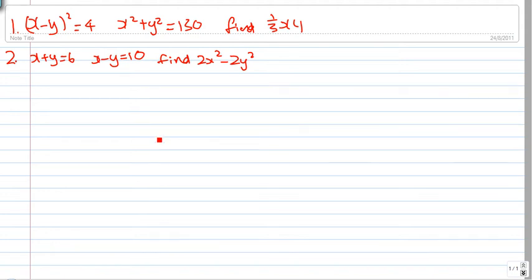Okay, I've got another two questions here. Let's look at question one first. If (x - y)² equals 4 and x² + y² equals 130, find ⅓xy.